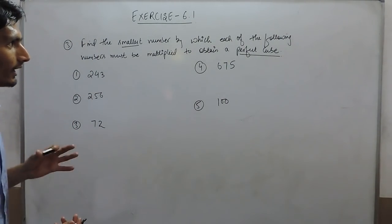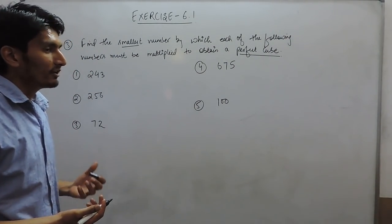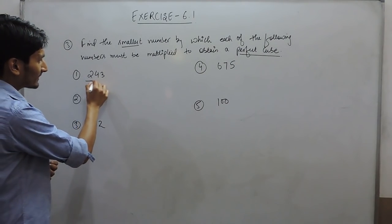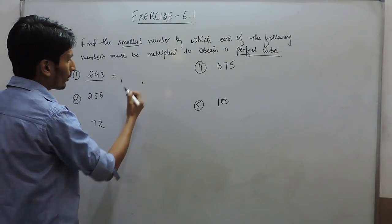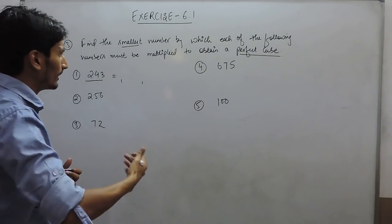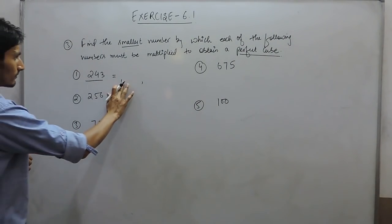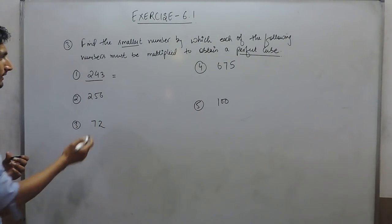We know that a number is a perfect cube when it is factored in a group of 3. Let us see what that actually means.